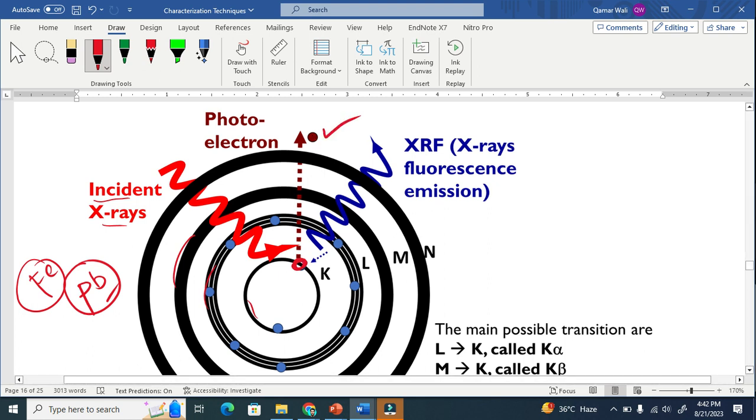Now we know that to make the atom stable, there are electrons in the outer orbits, so they will just start falling to that empty place. So because of that we have X-ray here and this is what we call fluorescence emission.